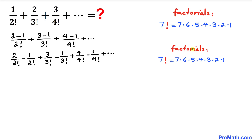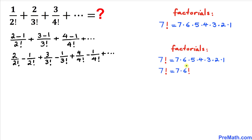Before going further, let's revisit the factorial example. 7 factorial is 7 times 6 times 5 times 4 times 3 times 2 times 1, where 6 times 5 times 4 times 3 times 2 times 1 is 6 factorial. So 7 factorial equals 7 times 6 factorial. Using this rule, 3 divided by 3 factorial becomes 3 divided by (3 times 2 factorial), and the 3s cancel, giving us 1 divided by 2 factorial.